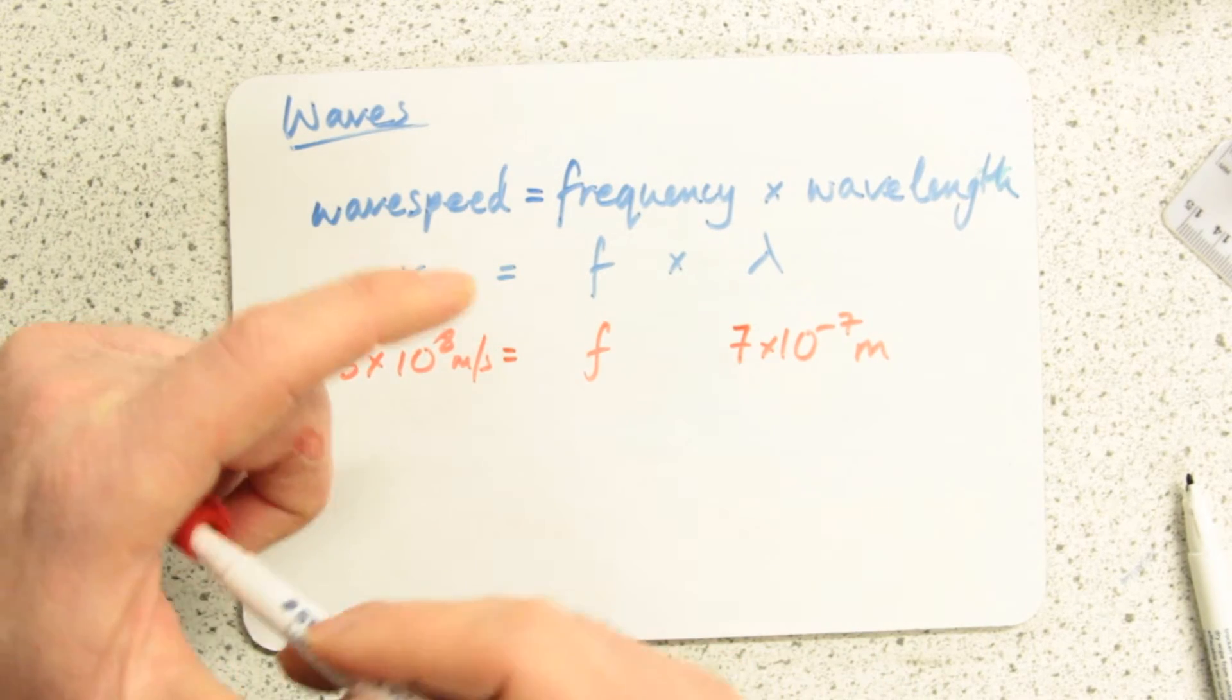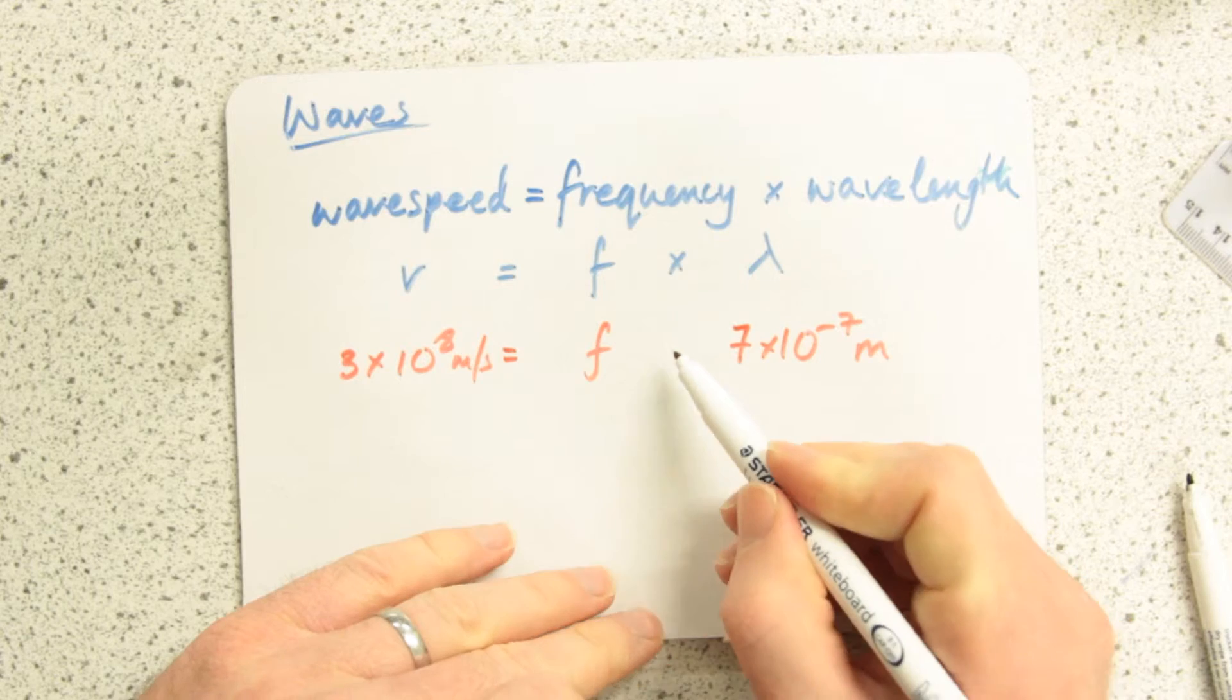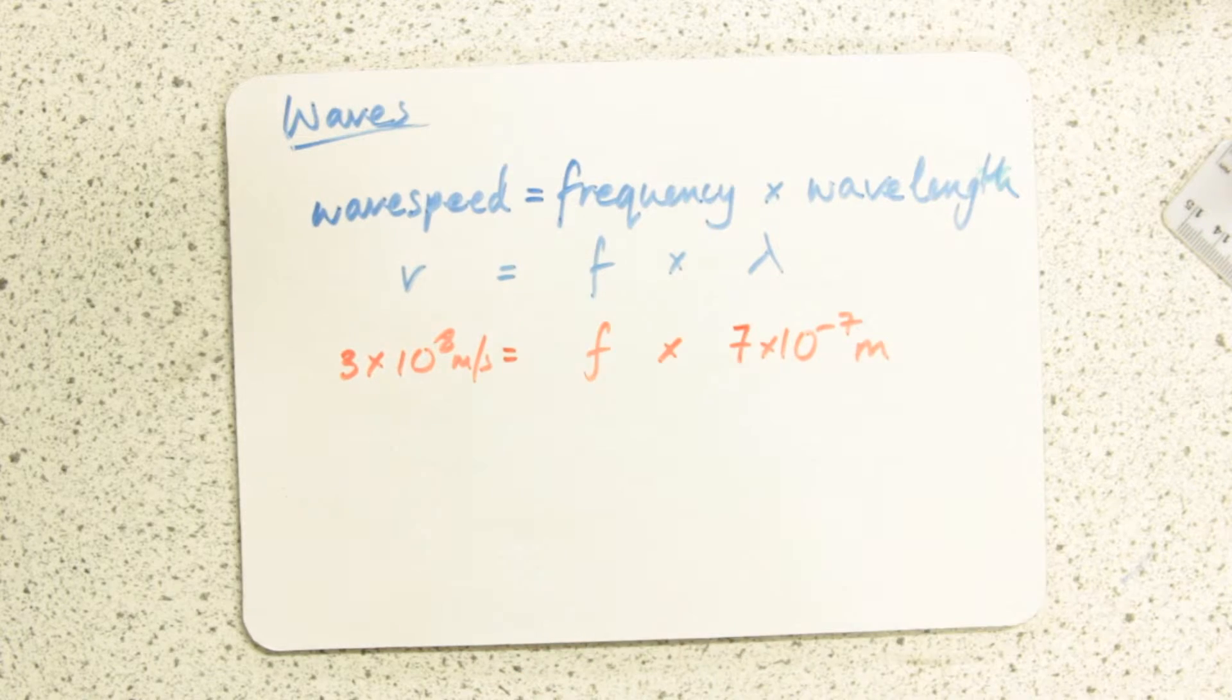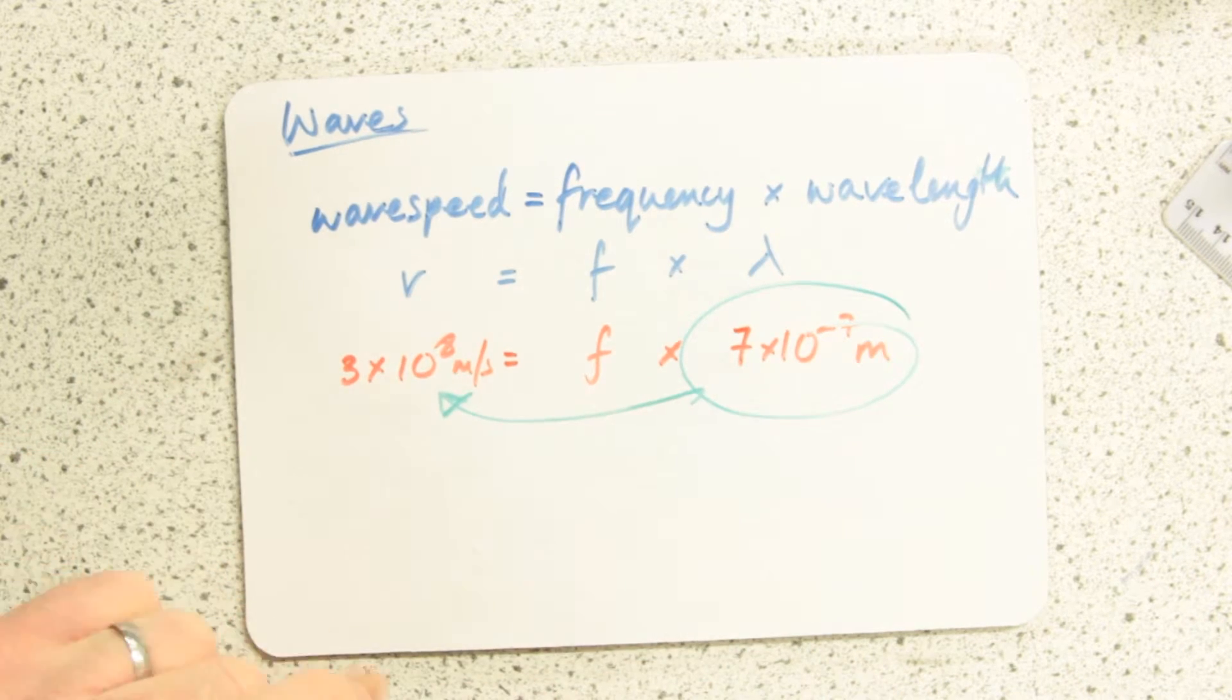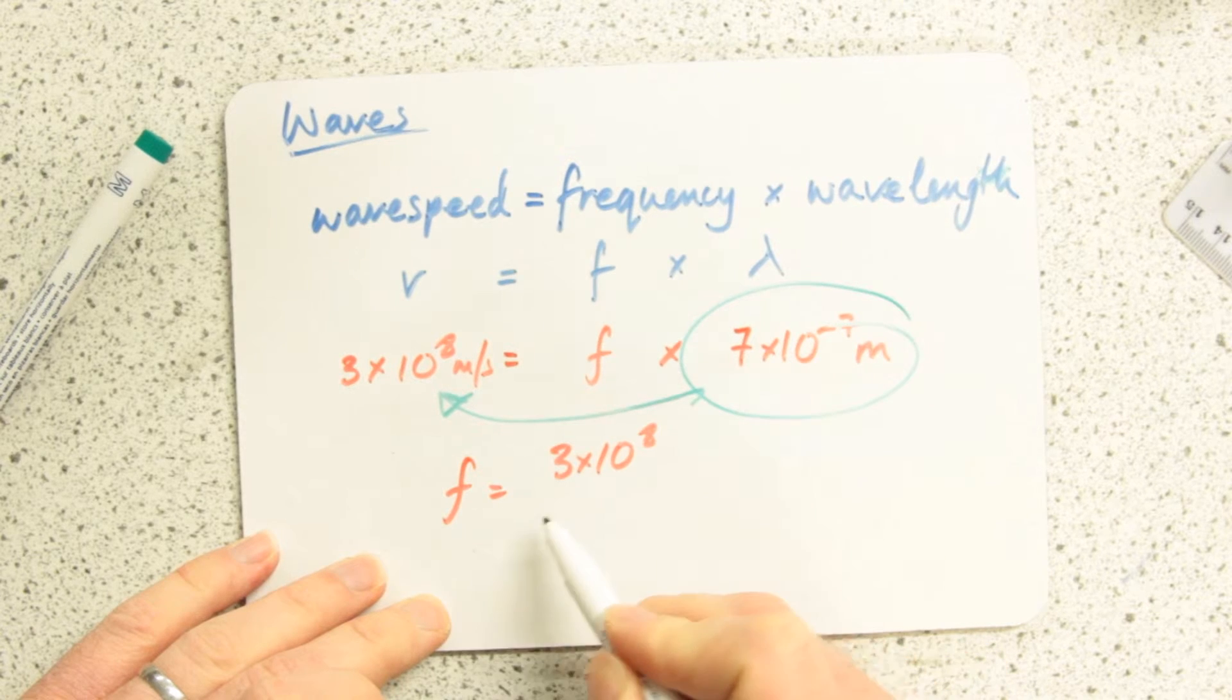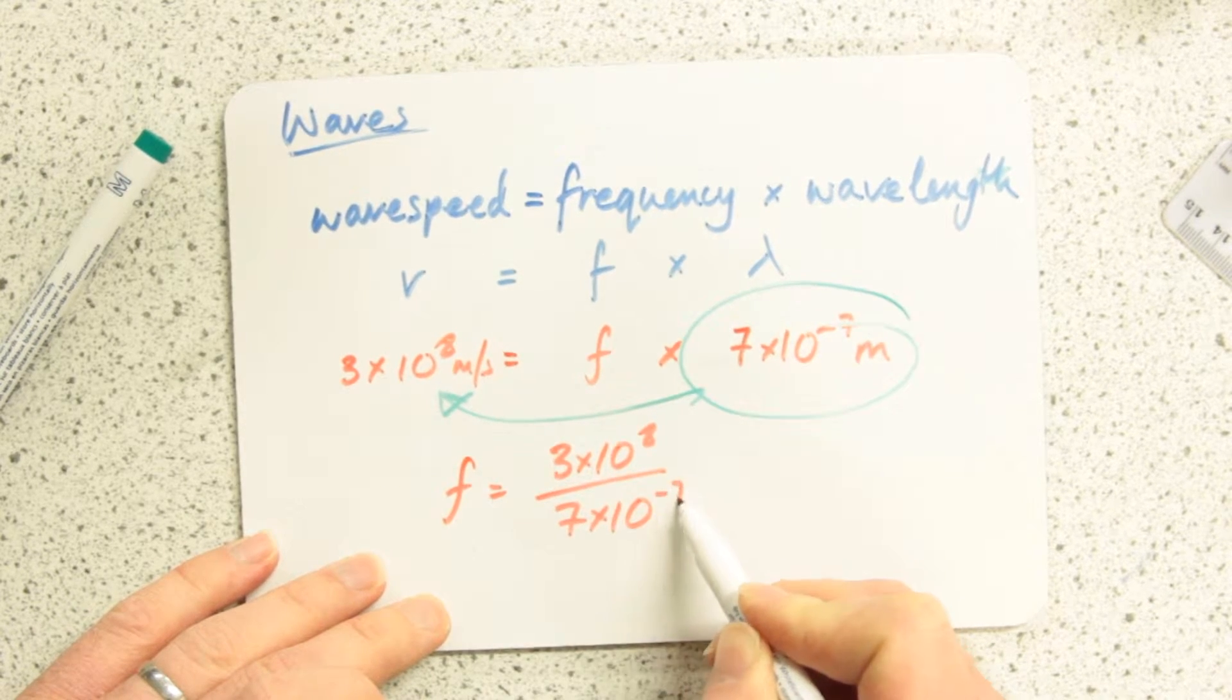Rearranging is no harder than before. We can just do the inverse operations. I've got times by 7 times 10 to the minus 7 here, so just do divide by 7 times 10 to the minus 7. So frequency is 3 times 10 to the 8 divided by 7 times 10 to the minus 7 metres.